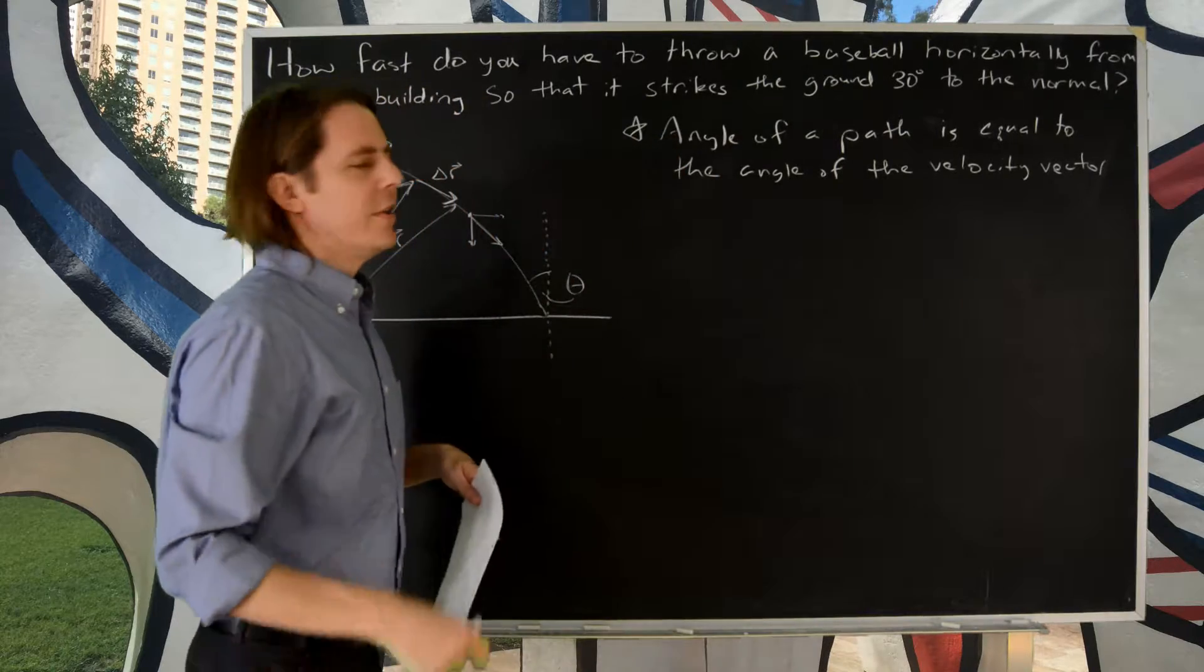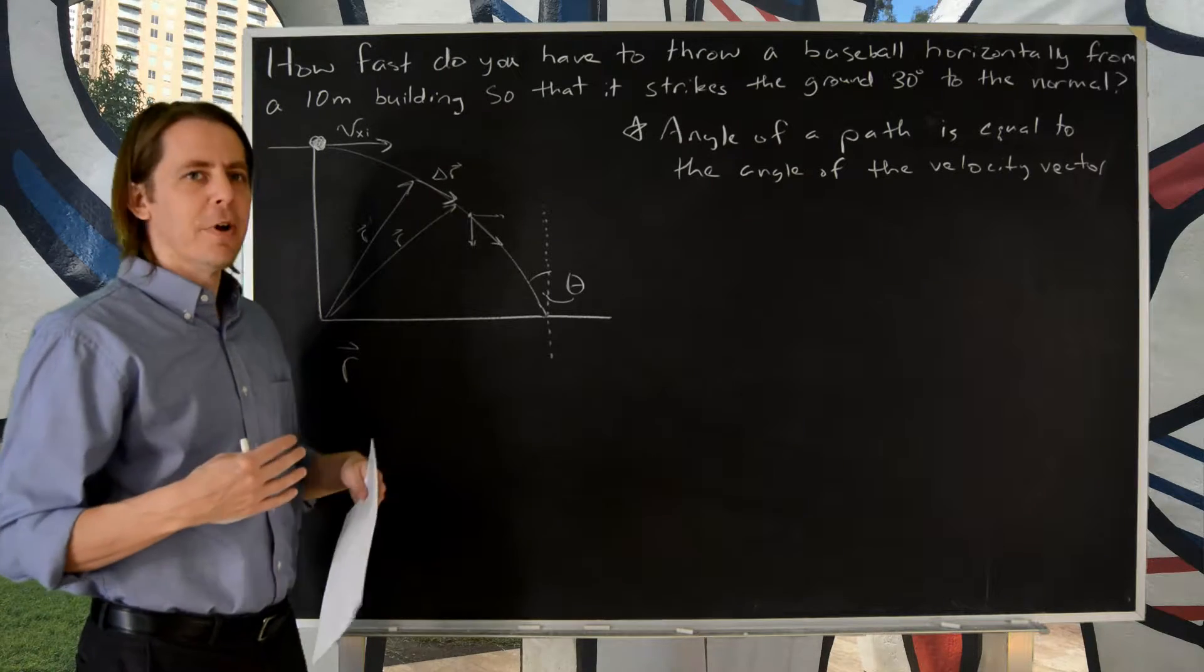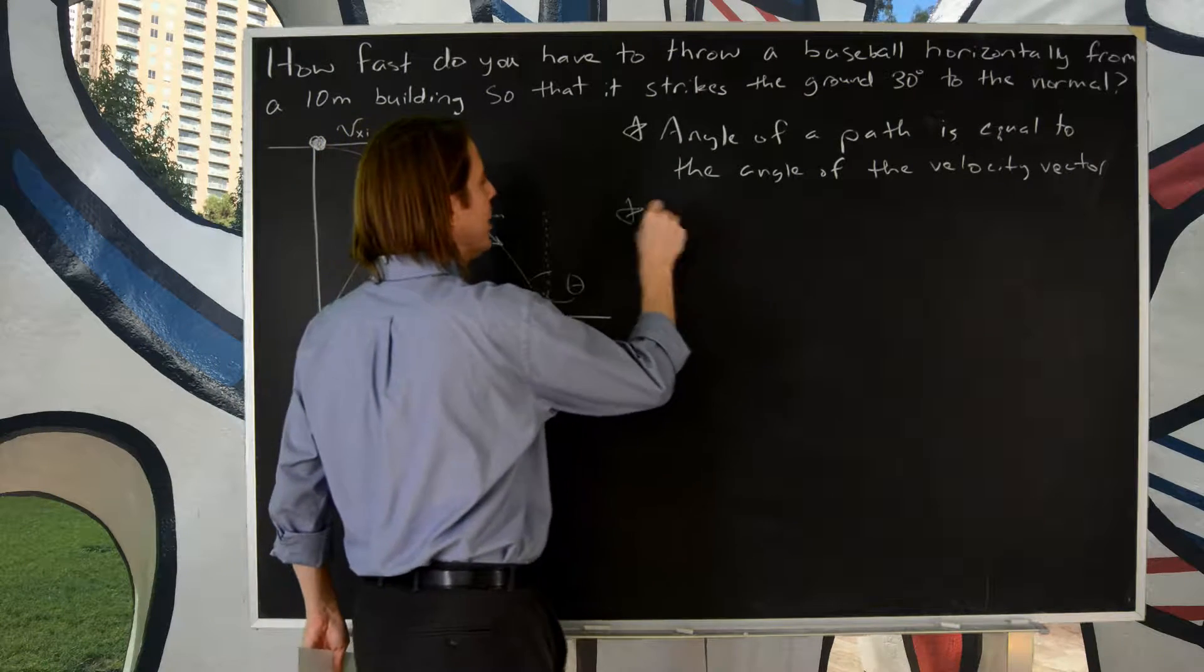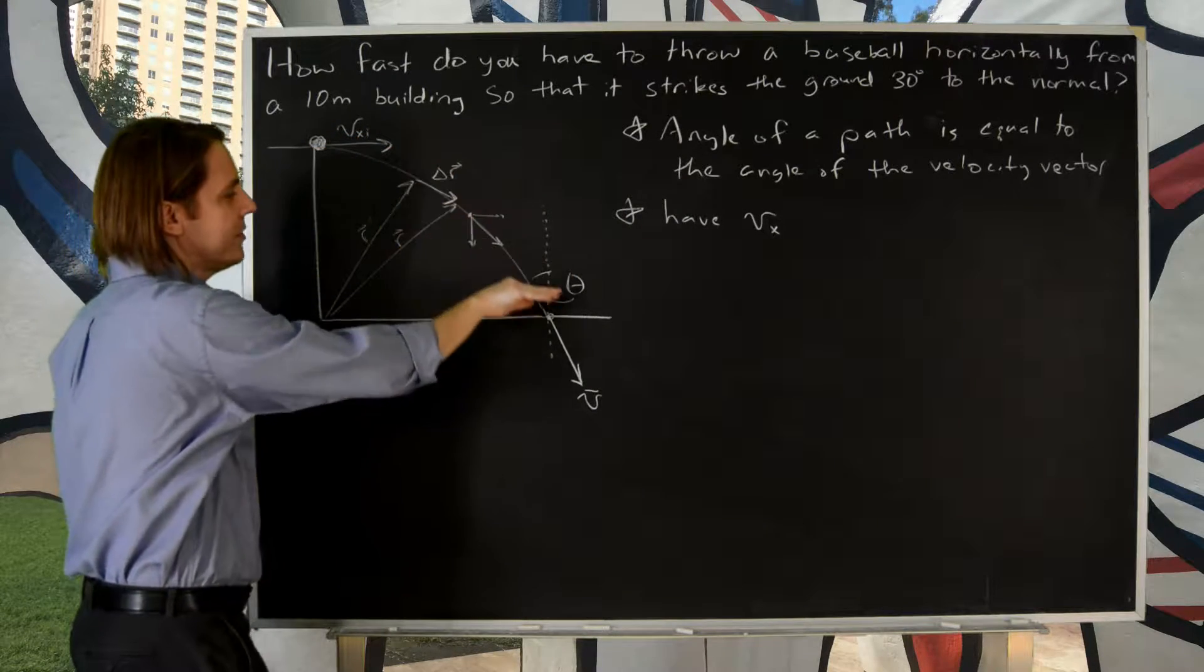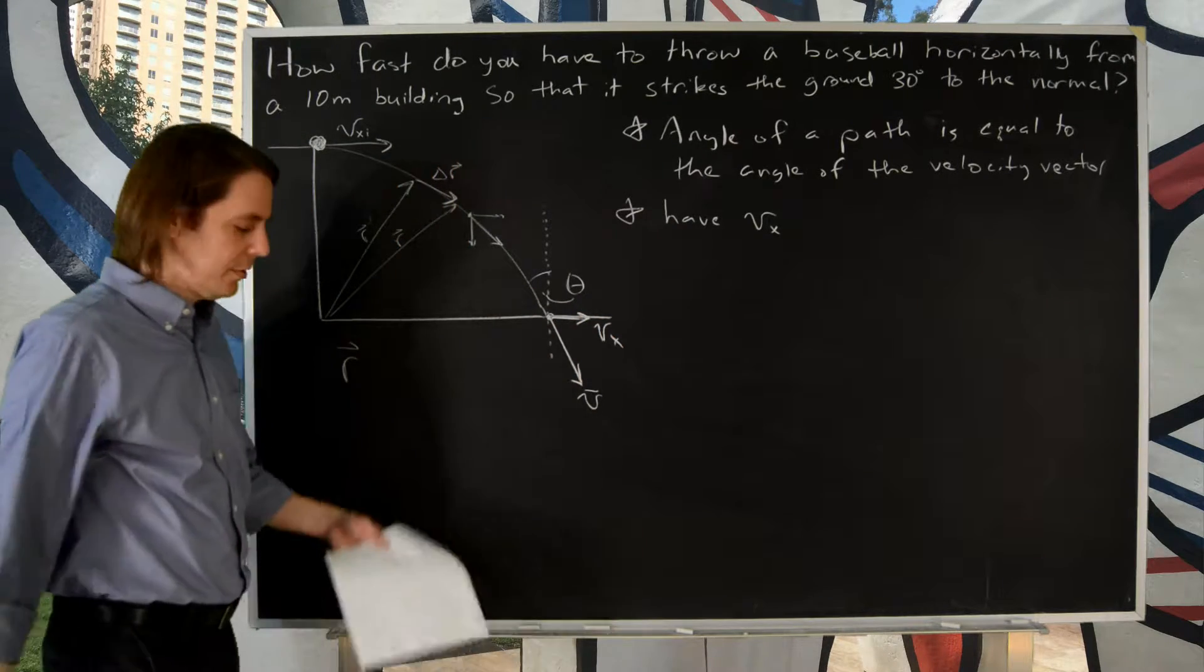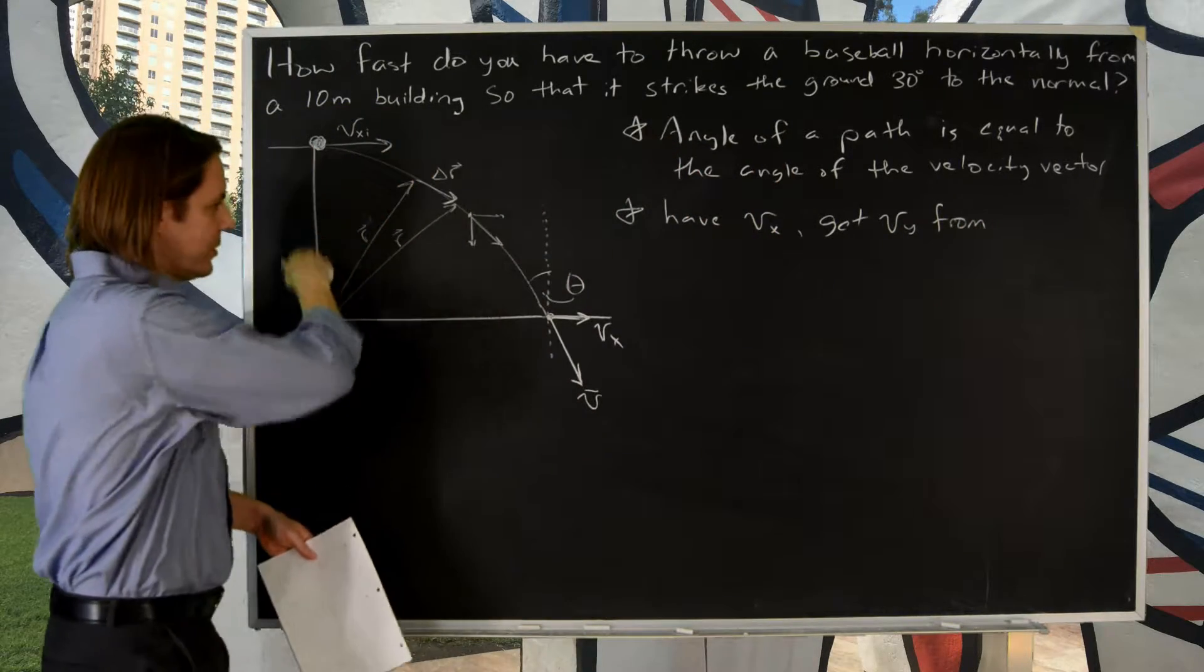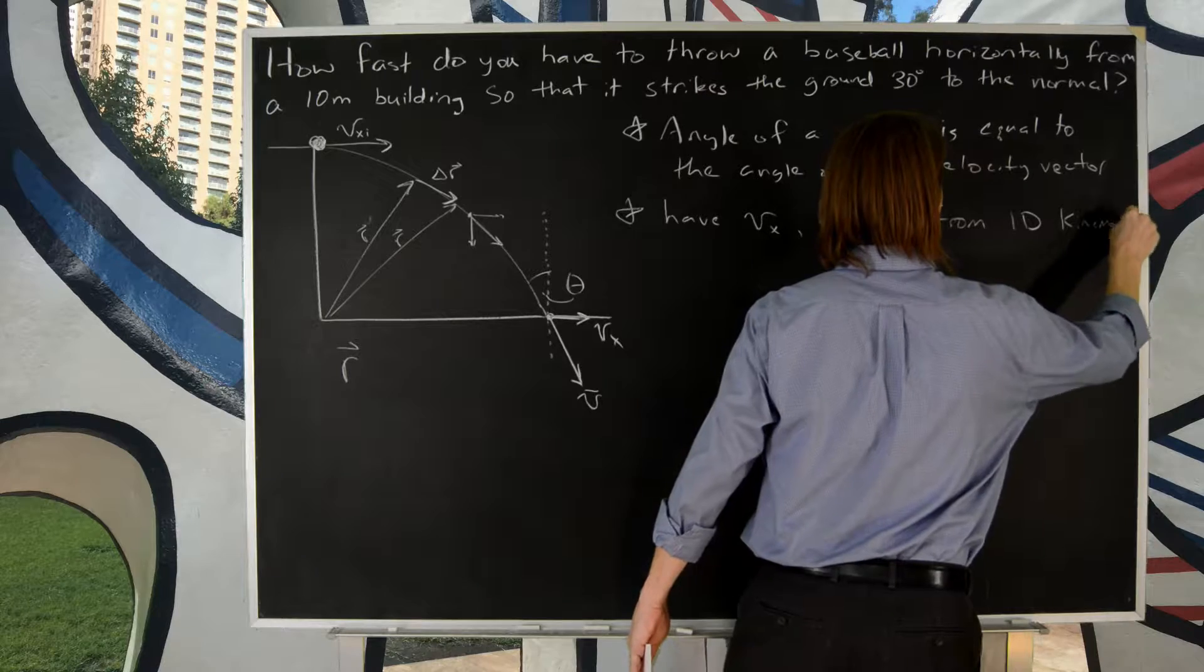All right, now the exact formula you would use to get that angle depends on the geometry of the problem. But we know we need to find the velocity vector right when it strikes, which is basically right here. So that's what we're looking for right there. So let's think - what else do we know about this problem? We know we have vx, because vx initial, there's no acceleration in the x, vx is not going to change. So we actually know this component. We just need to find vy. So we need to find vy from 1D kinematics.